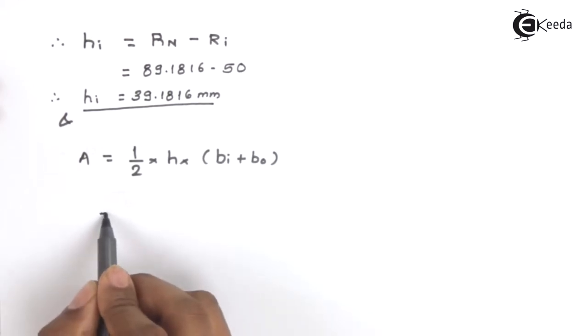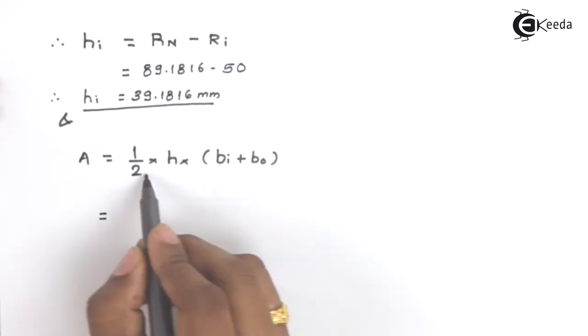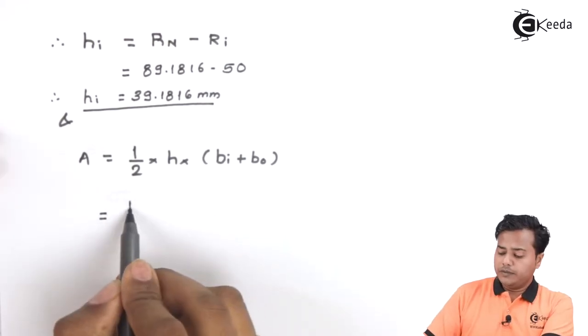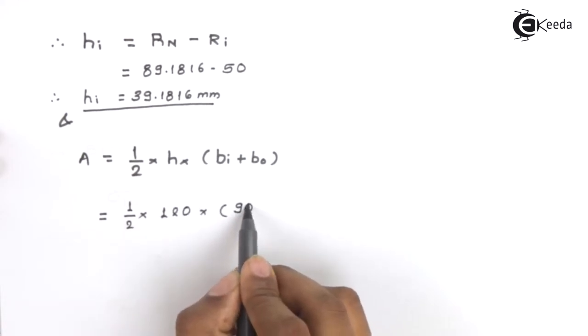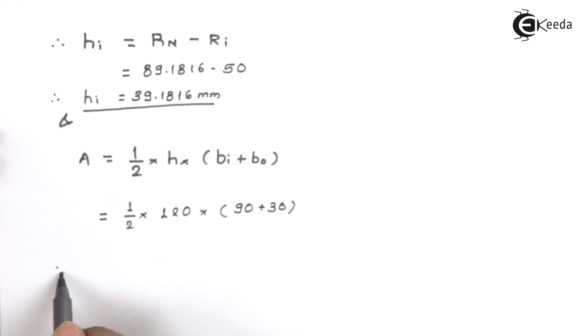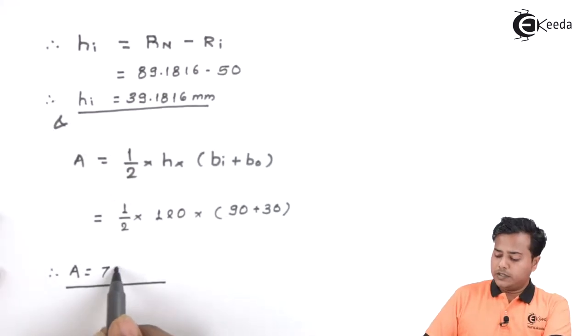The last component that is very crucial is the area of the cross section. We know that it is a trapezoid and hence a very simple formulae. The answer that is obtained is 7200 millimeter square.